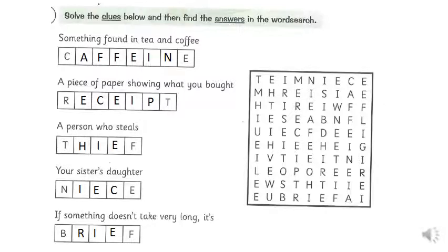And here were your answers. Something found in tea and coffee is caffeine with an EI. A piece of paper showing what you bought is a receipt. A person who steals is called a thief. Your sister's daughter is a niece. And if something doesn't take very long, it's brief. So there were your missing words. Well done if you managed to solve them and find them in the word search.